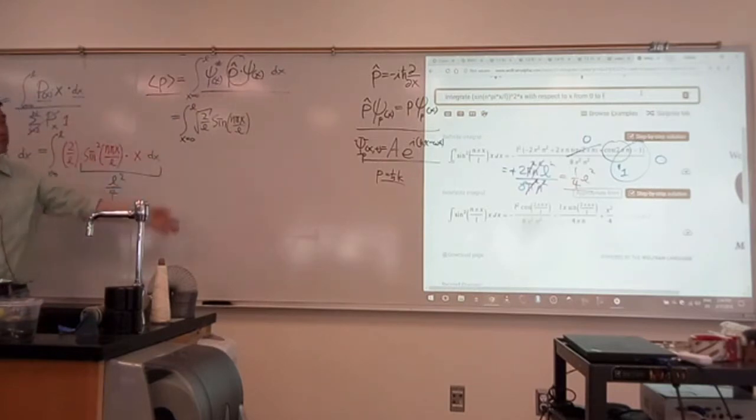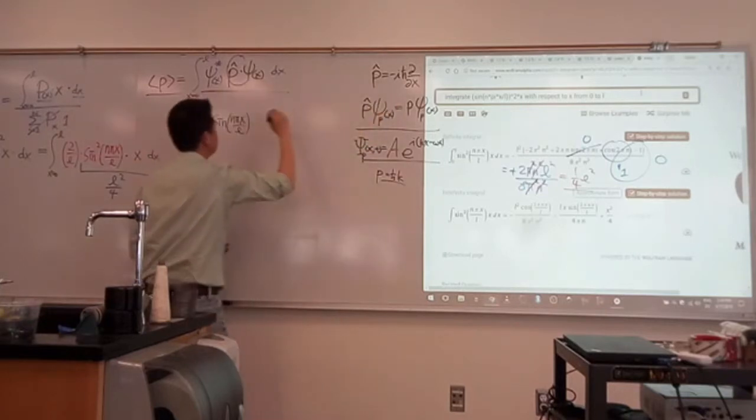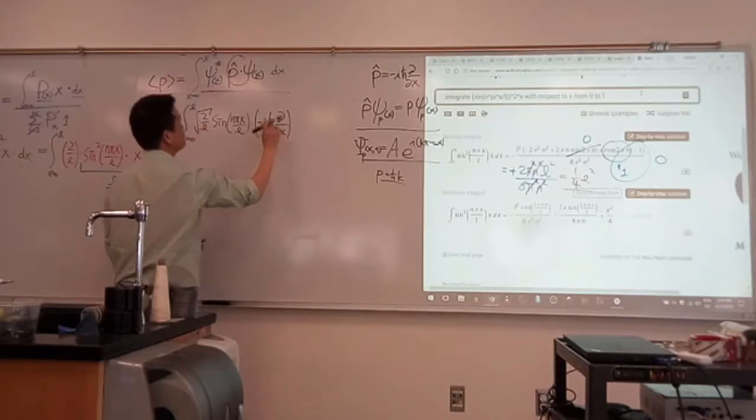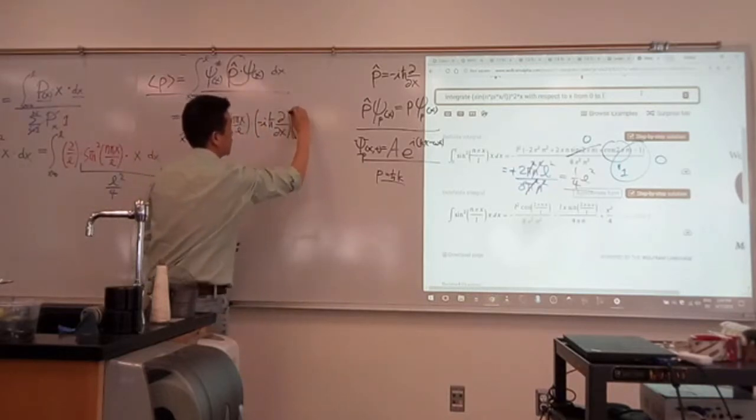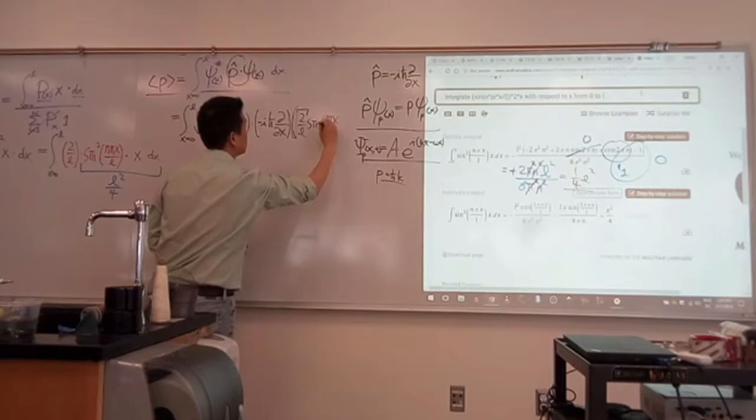So times the momentum operator, minus i h bar, derivative with respect to x, and then the function, square root of 2 over L, sine of n pi x over L, dx.